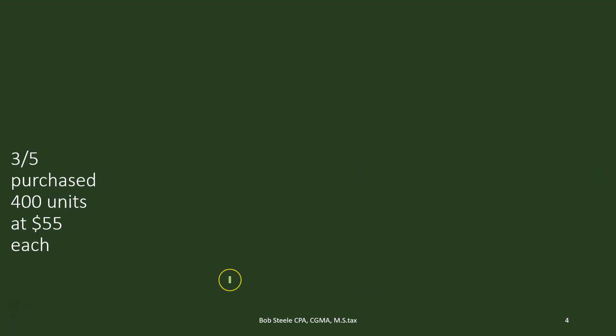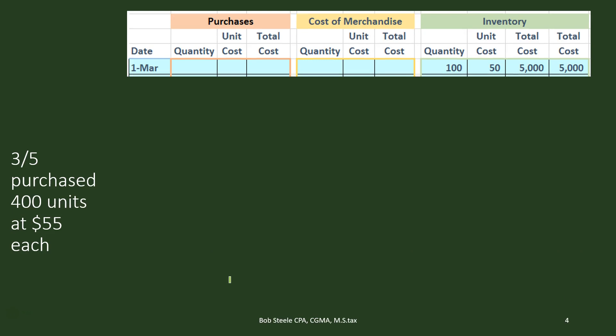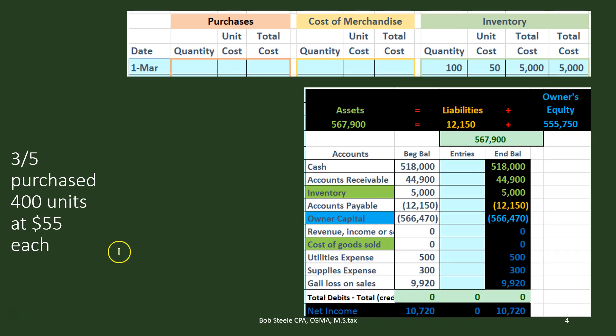We're going to assume that we purchased 400 units at $55. Before this activity we had units costing $50, and we're going to assume a normal increase in price — so now the units we are buying cost $55. Over time that's usually what's going to happen: we assume prices go up due to inflation, all else equal. There could be times when prices go down, but the normal assumption is that prices will increase.